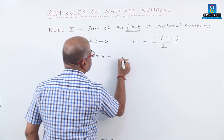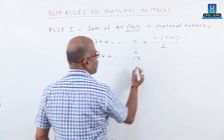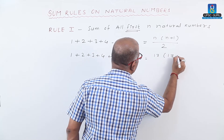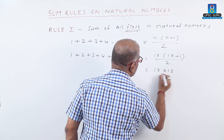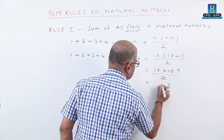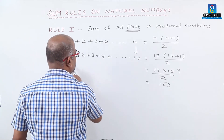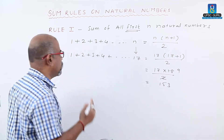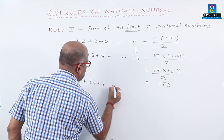For example, find the sum of 1 plus 2 plus 3 plus 4 up to 17 numbers. Here n equals 17, so substitute: 17 into 17 plus 1 divided by 2, which gives 17 into 18 upon 2. Two nines are 18; 17 nines are 153. Therefore, the sum of the first 17 natural numbers equals 153.